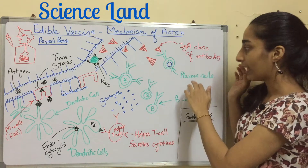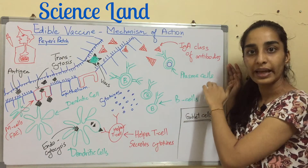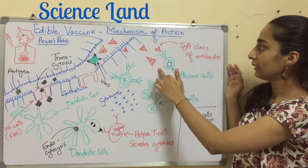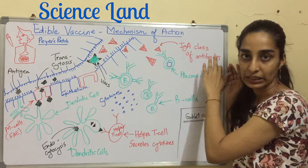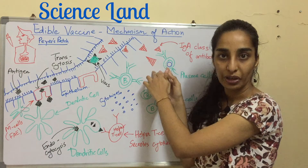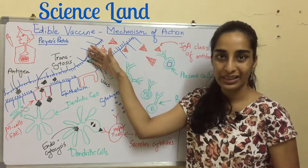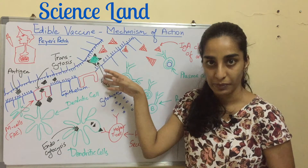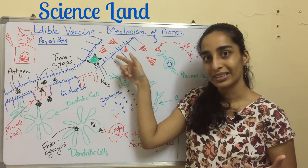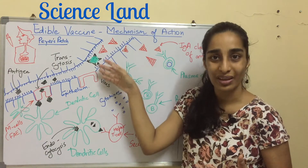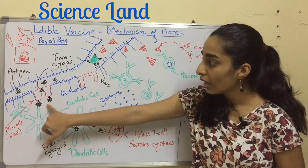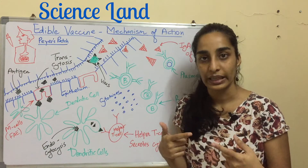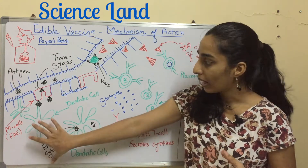The helper T cells stimulate B cells by secreting certain cytokines. These cytokines attract B cells, which then migrate to the lymphoid area where they become active — at that point they are known as plasma cells. The antibodies they release are usually of the IgA class type. These antibodies pass through the epithelium into the lumen. When the actual virus comes in, the antibody is already present and neutralizes that particular virus.